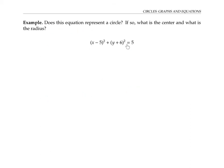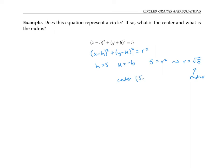Suppose we're given an equation like this one, and we want to decide if it's the equation of a circle, and if so, what's the center and what's the radius? Well, this equation matches the form for a circle, x minus h squared plus y minus k squared equals r squared, where h equals five, k equals negative six. That way, when we subtract a negative six, it's the same thing as adding a six. And on the other side, the five needs to be equal to r squared, so that means that r must be the square root of five. So this is our radius, and our center is the point five, negative six.